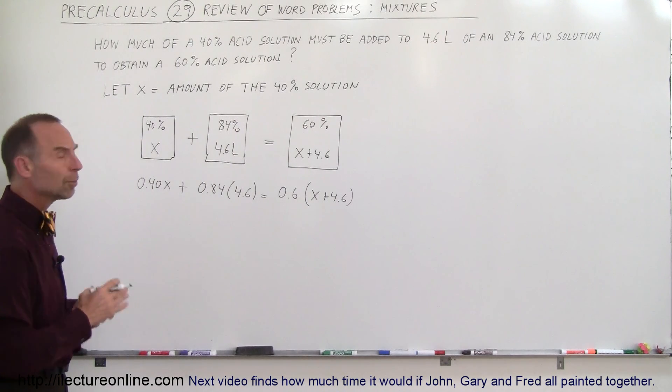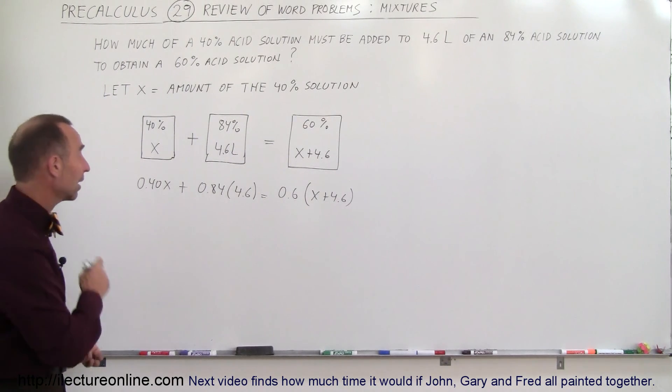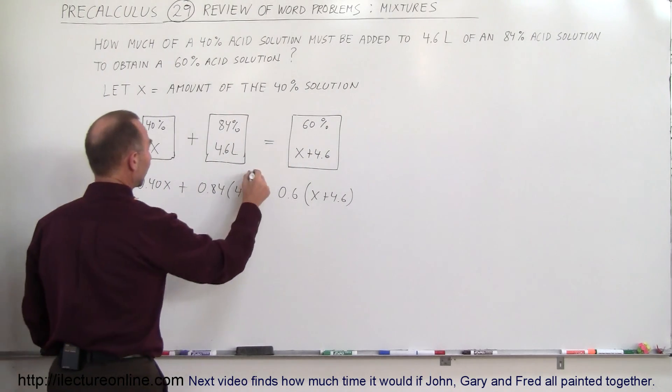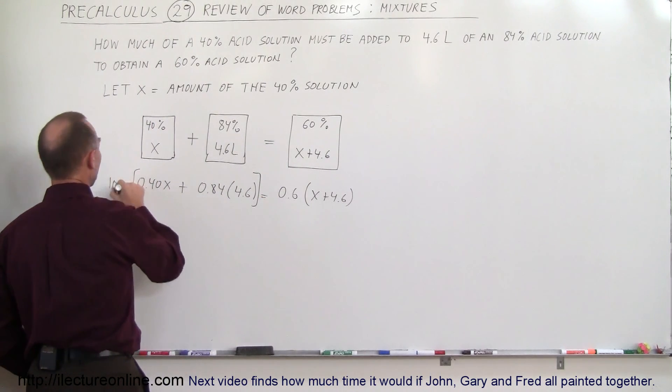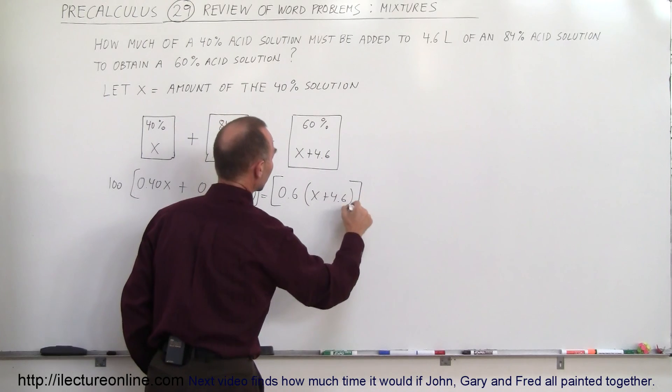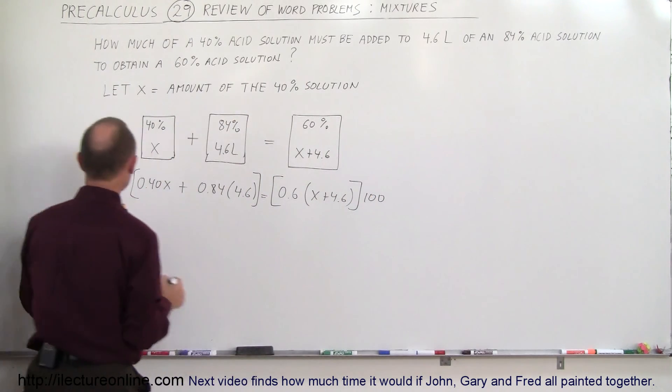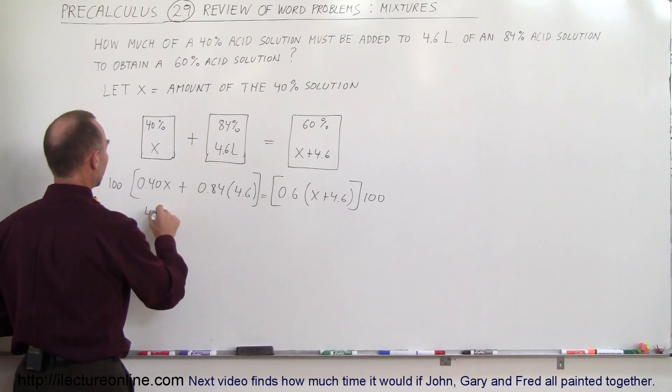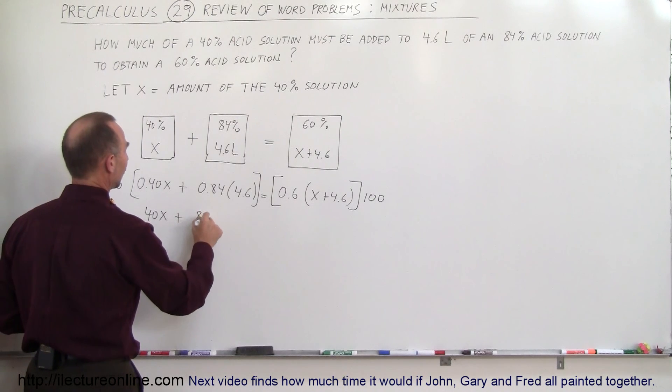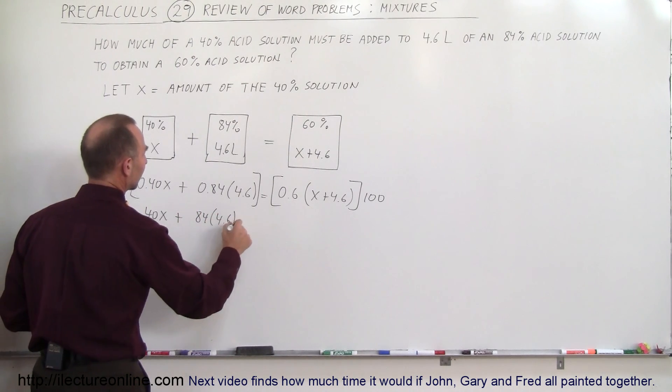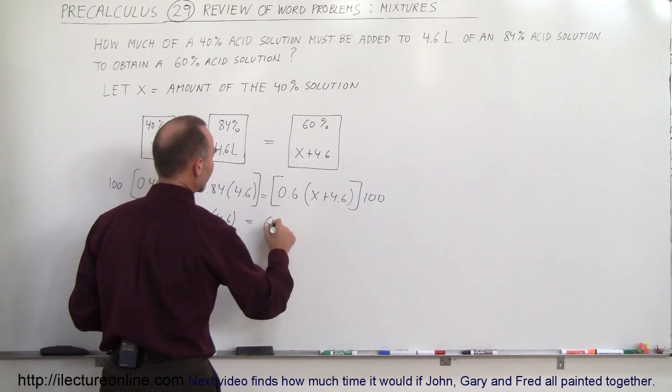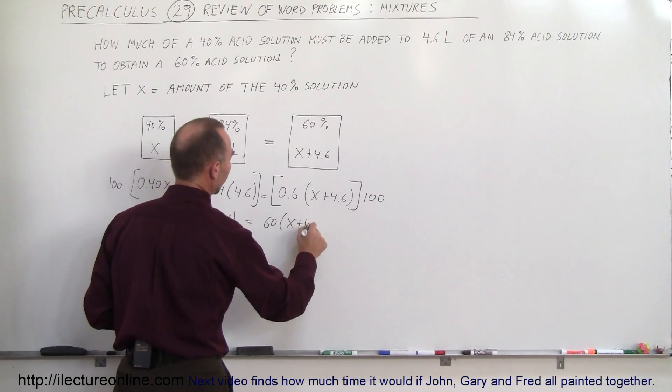First of all I think we need to multiply both sides by 100 to get rid of the decimal. So multiply the left side by 100 and the right side of the equation by 100 as well. That gives us 40X plus 84 times 4.6 is equal to 60 times X plus 4.6.